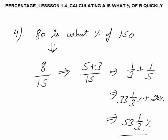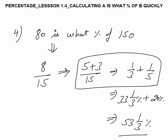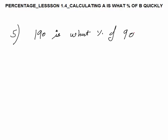This part you can solve in your brain — no need to write it in the exam. In the exam, straight away you should calculate and write the answer: 53⅓ percent is our final answer. Question 5: 190 is what percent of 90? Try to solve yourself in the fastest way, then look at my solution.